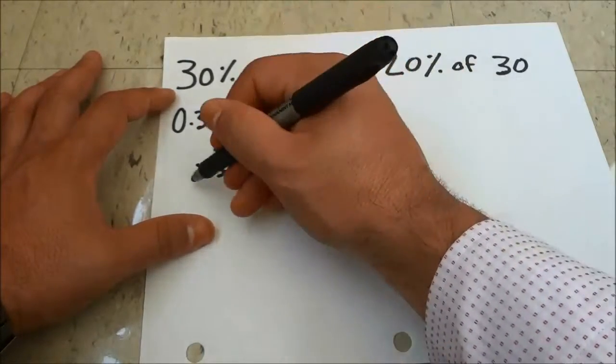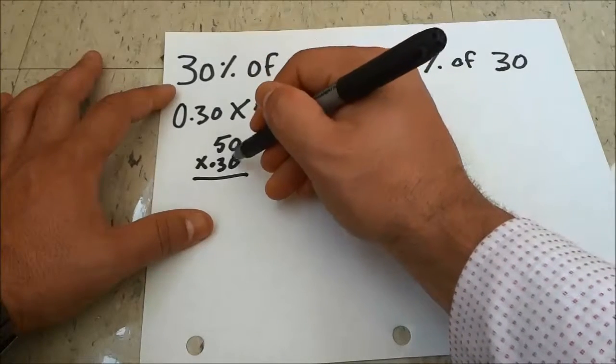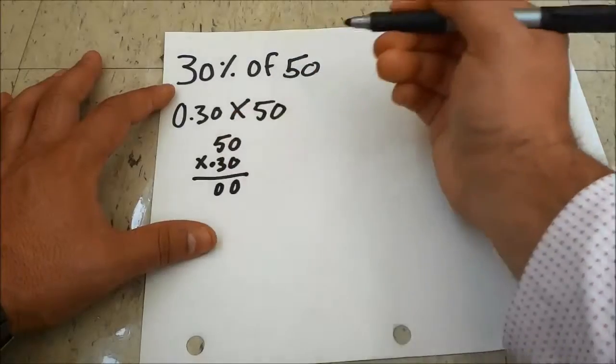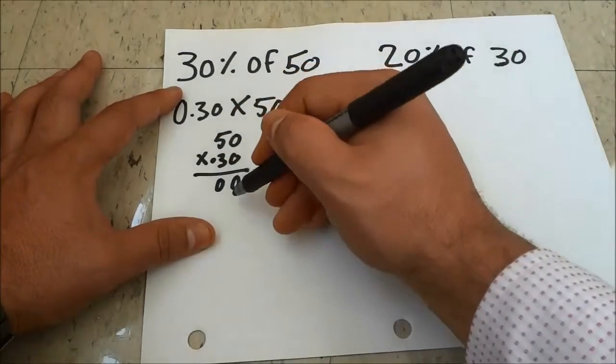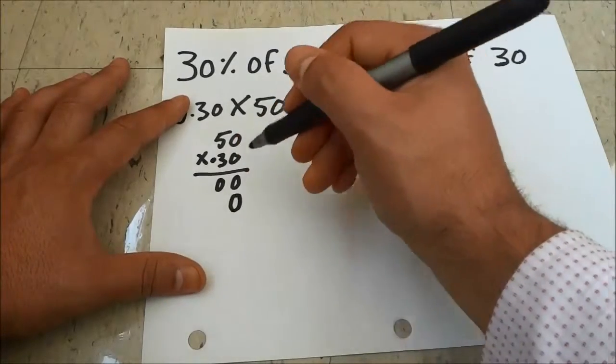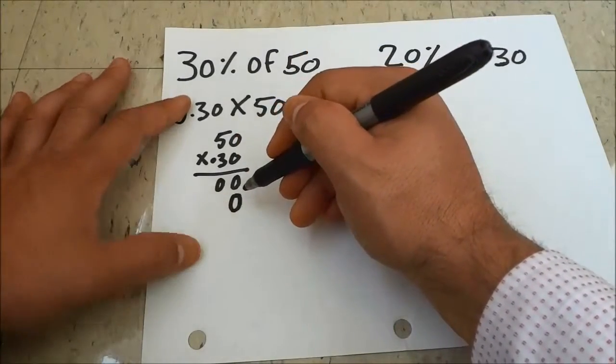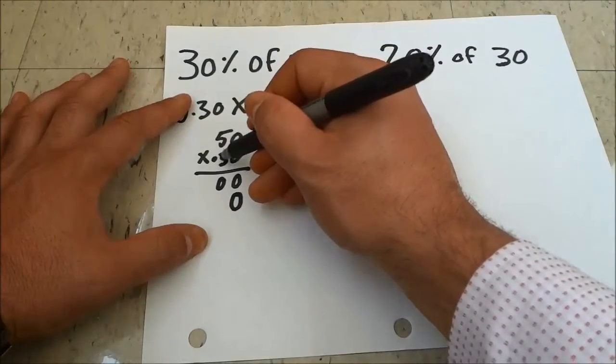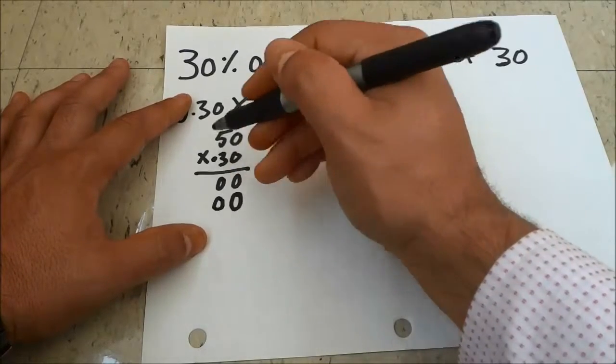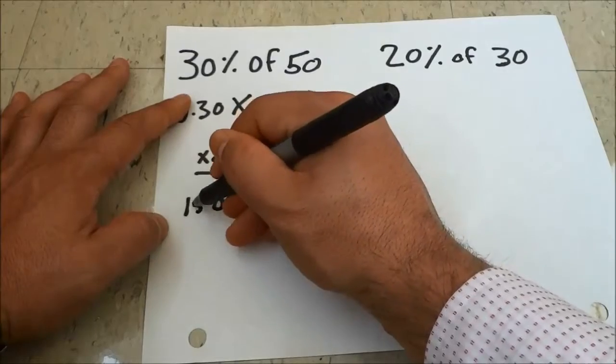I'm going to start off by doing 0 times 0 which is 0, and 0 times 5 which is also 0. Then, because I'm going to the next row, I'm going to put a little placeholder there which is a 0. And I'm going to do 3 times 0 which is 0, and 3 times 5 which is 15.